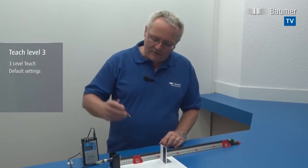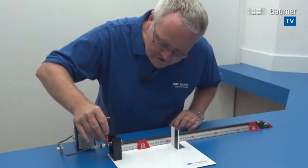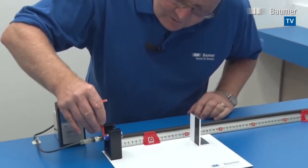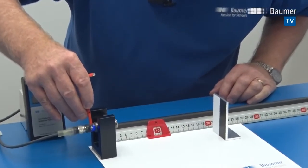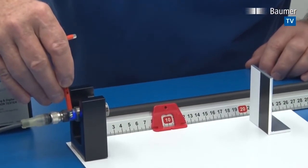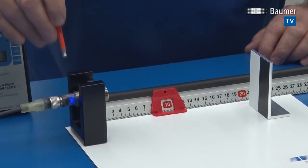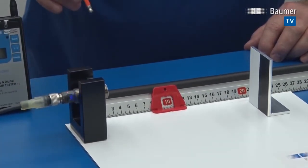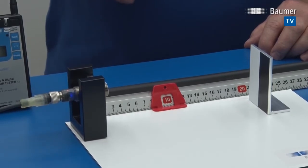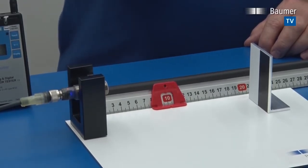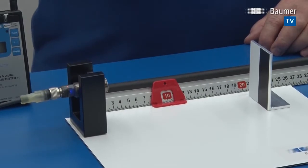The third level resets the sensor to its factory default settings. The third level is reached by using qteach again. We go past first level, past second level, and when it starts to flash rapidly you just remove the tool and the sensor has been set back to its factory default settings. It's as easy as that.